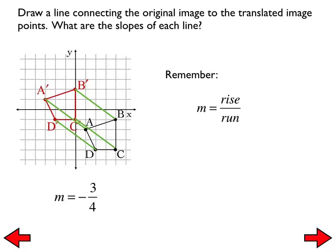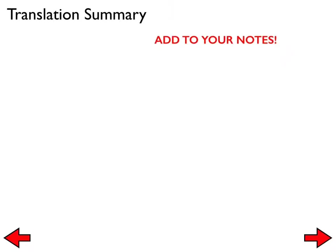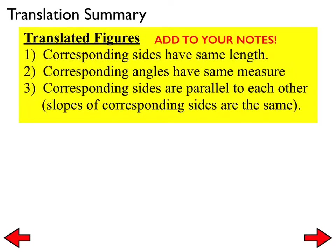Please add this translation summary to your notes, because we'll keep coming back to this idea. Translated figures: corresponding sides have the same length; corresponding angles have the same measure; corresponding sides are parallel to each other, which means their slopes are the same.